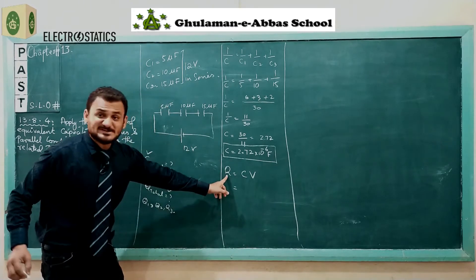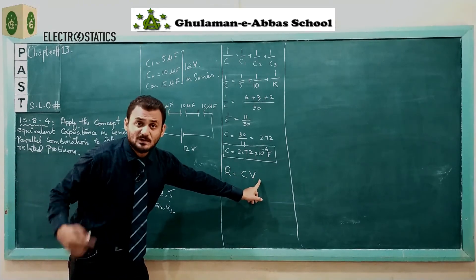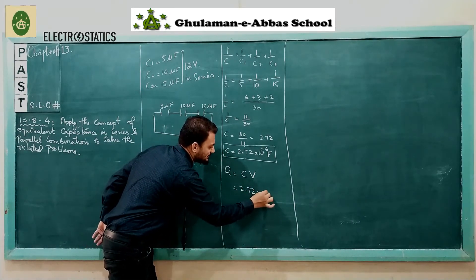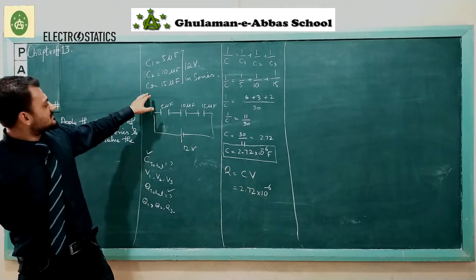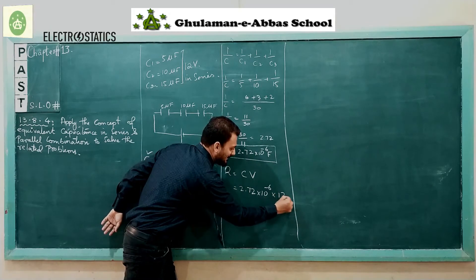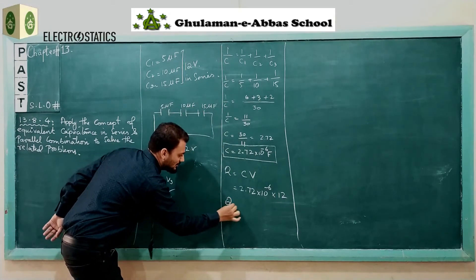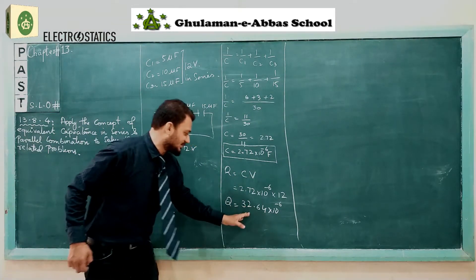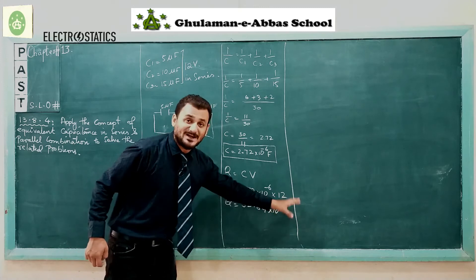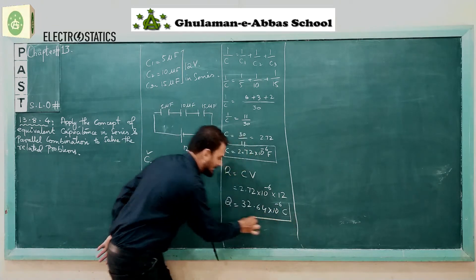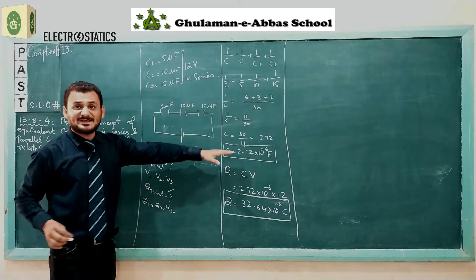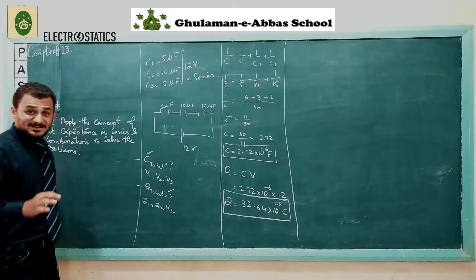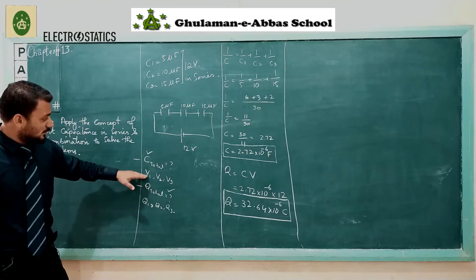Now we calculate the total charge. Using Q = CV, the total charge is: Q = C × V = 2.72 × 10⁻⁶ multiplied by 12. This gives us Q = 32.64 × 10⁻⁶ coulombs. So after finding the total capacitance, we have also calculated the total charge.